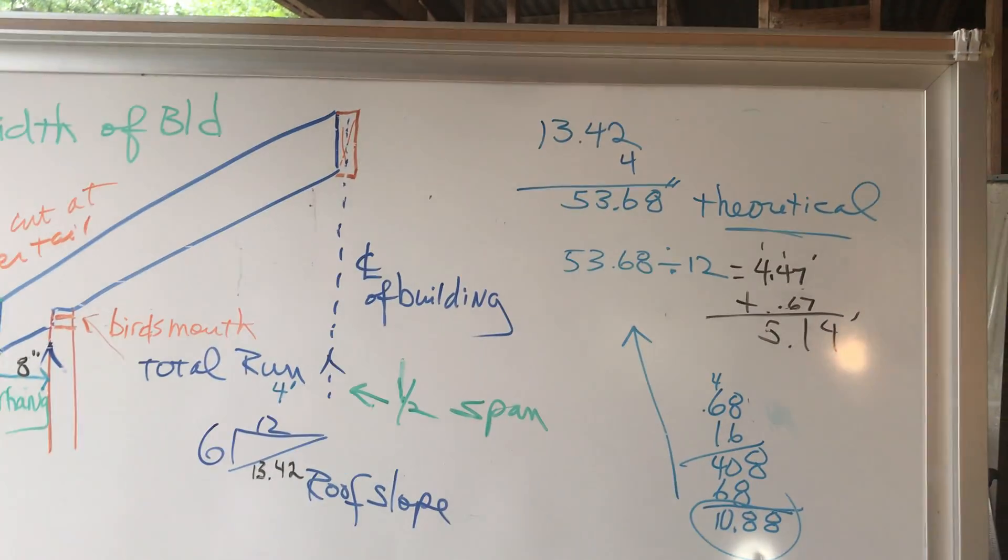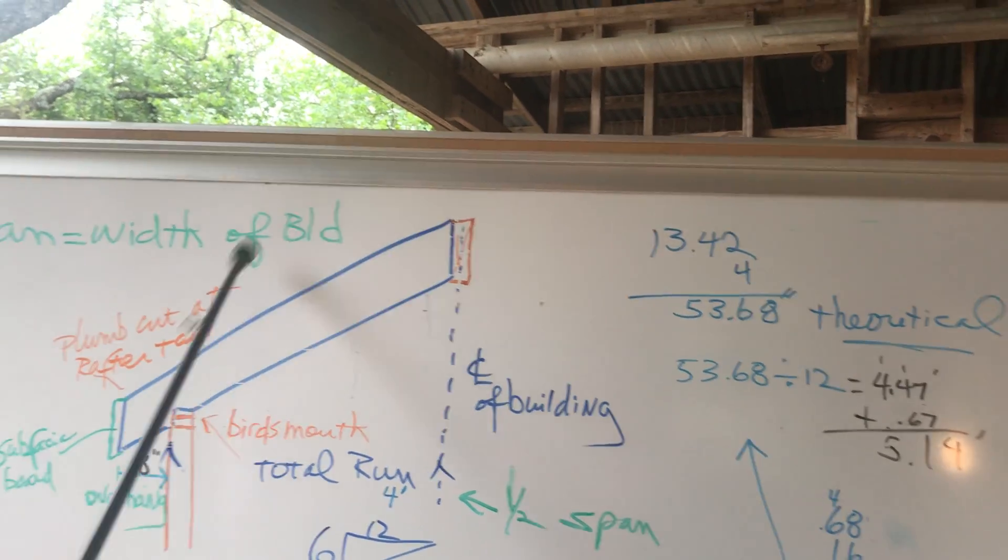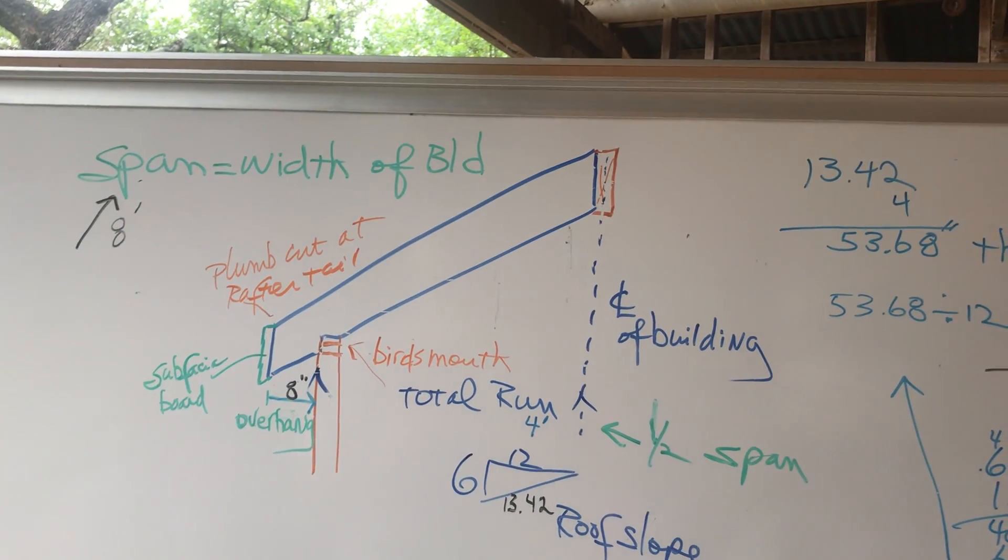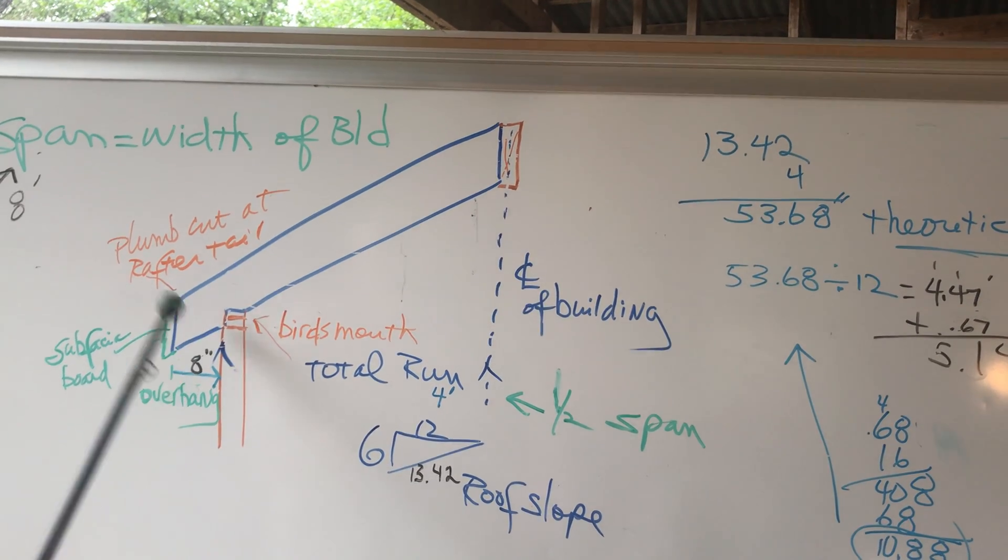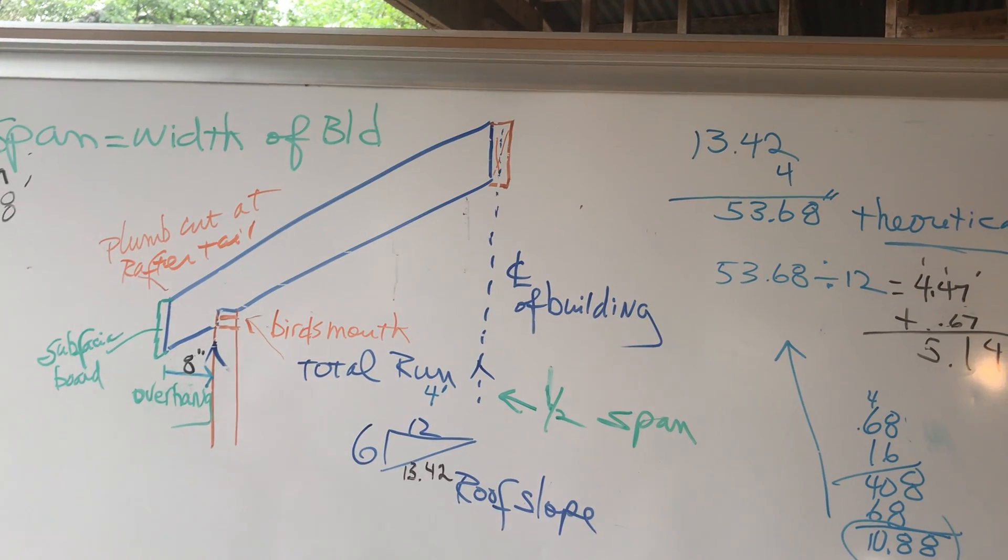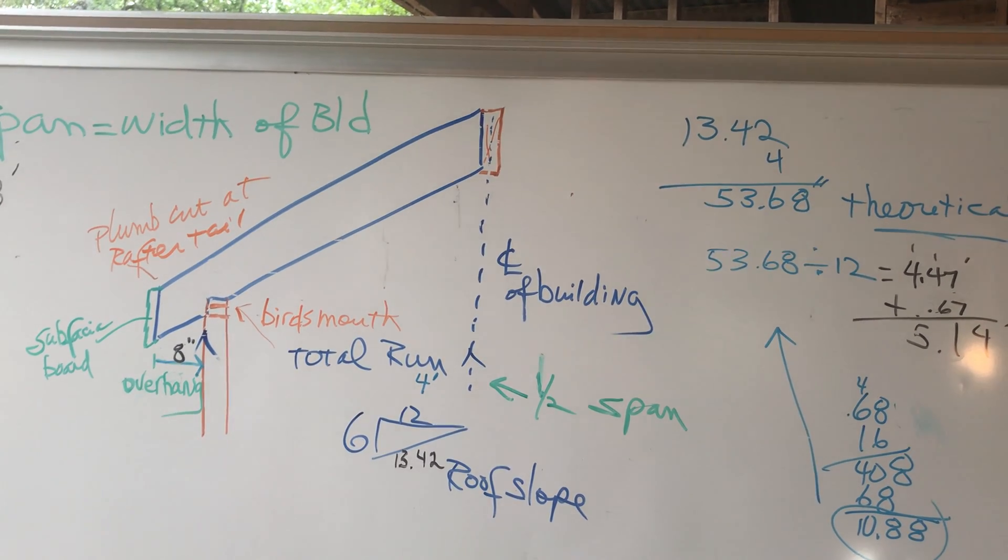So, now, I have my total rafter length. Total rafter length goes from the center of the building to include the overhang. The theoretical rafter length goes from the center of the building to the outside wall. So, we get through all this math, and eventually, we get down to laying out the rafter.